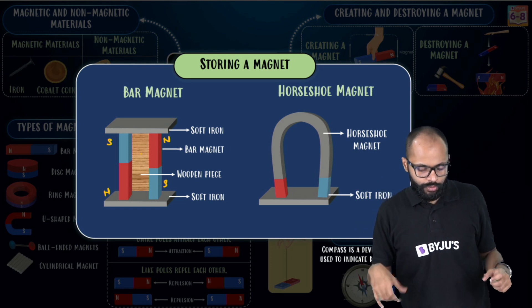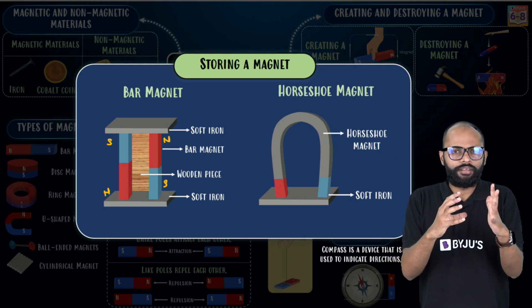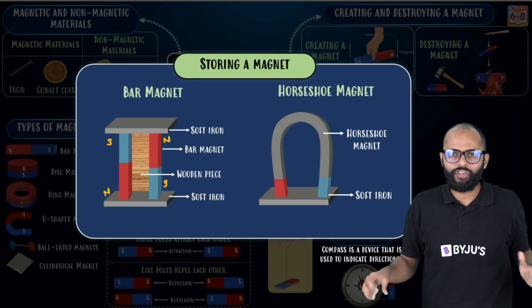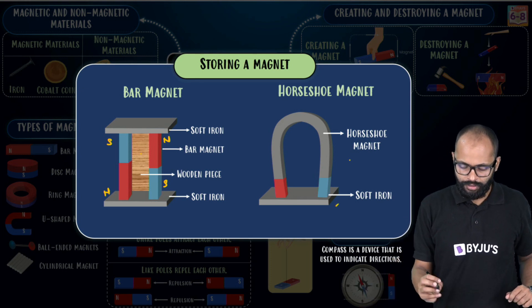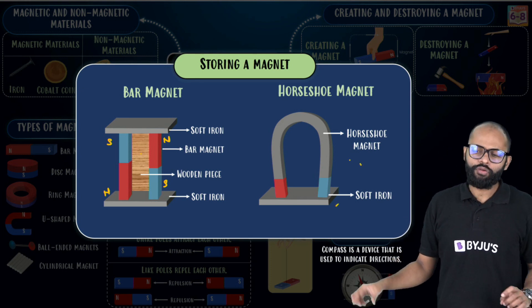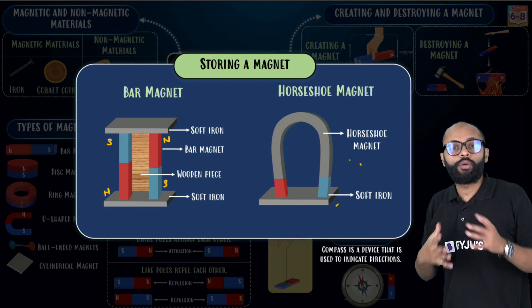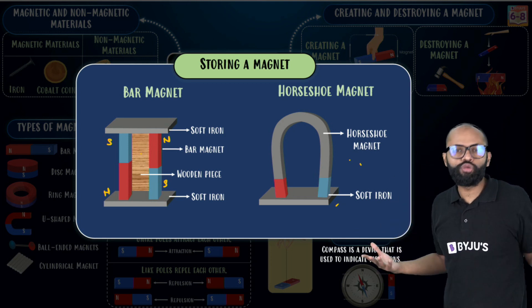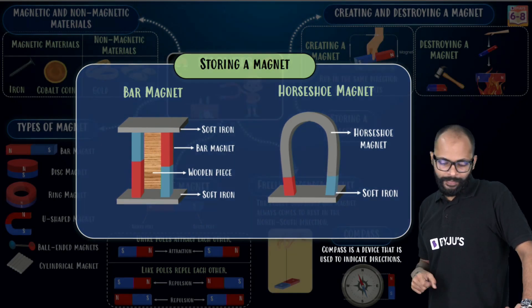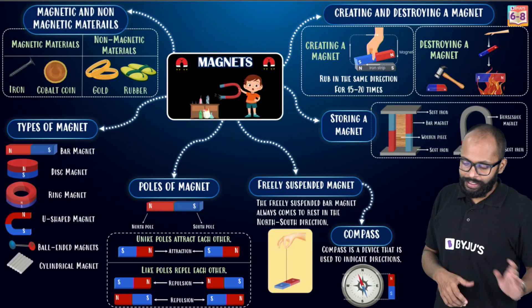Apart from that, if there is a horseshoe magnet, what you can do is take the horseshoe magnet and just place a soft iron core over it, right? A soft iron piece over it. So that's how you store a magnet. If you store a magnet like this, their magnet properties will be retained. They won't lose the properties. They will remain a magnet. Fine? So this is about how to store a magnet.